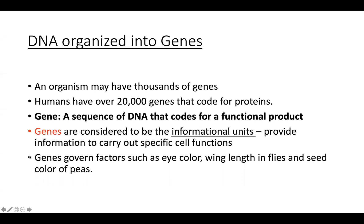Genes govern various factors about us, such as eye color in humans. On flies, different wing lengths are determined genetically. The seed color of pea plants is also determined genetically. Our DNA is organized into informational units known as genes, and in the human, we have over 20,000 genes dispersed throughout those 23 pairs of chromosomes. Those genes dictate various features — what we call the phenotype — things we can see physically, but also physiological features.